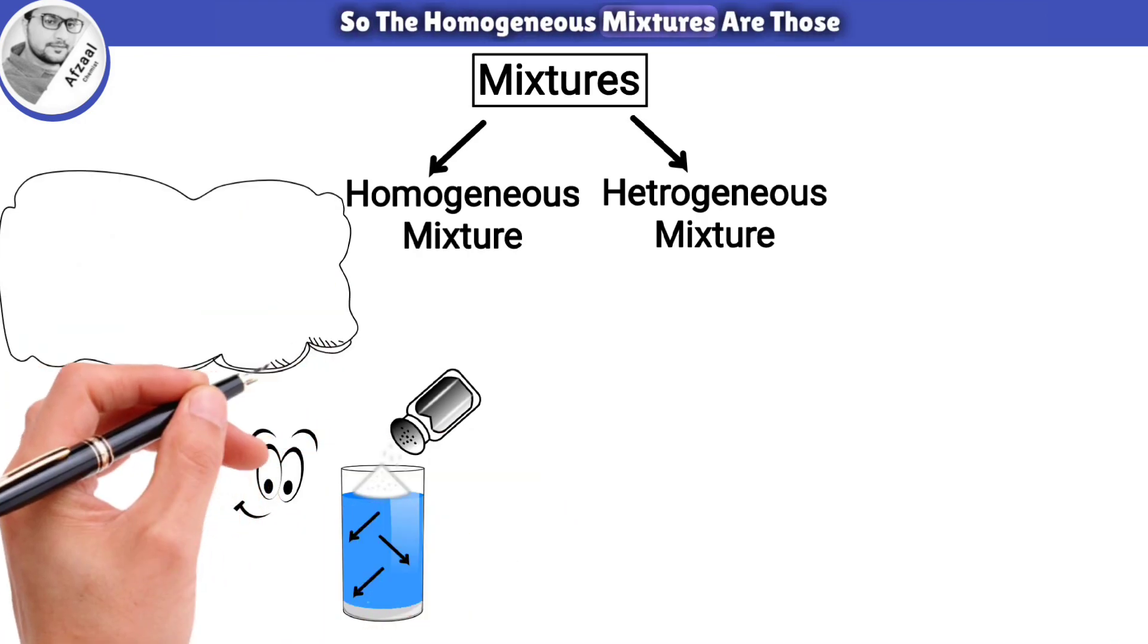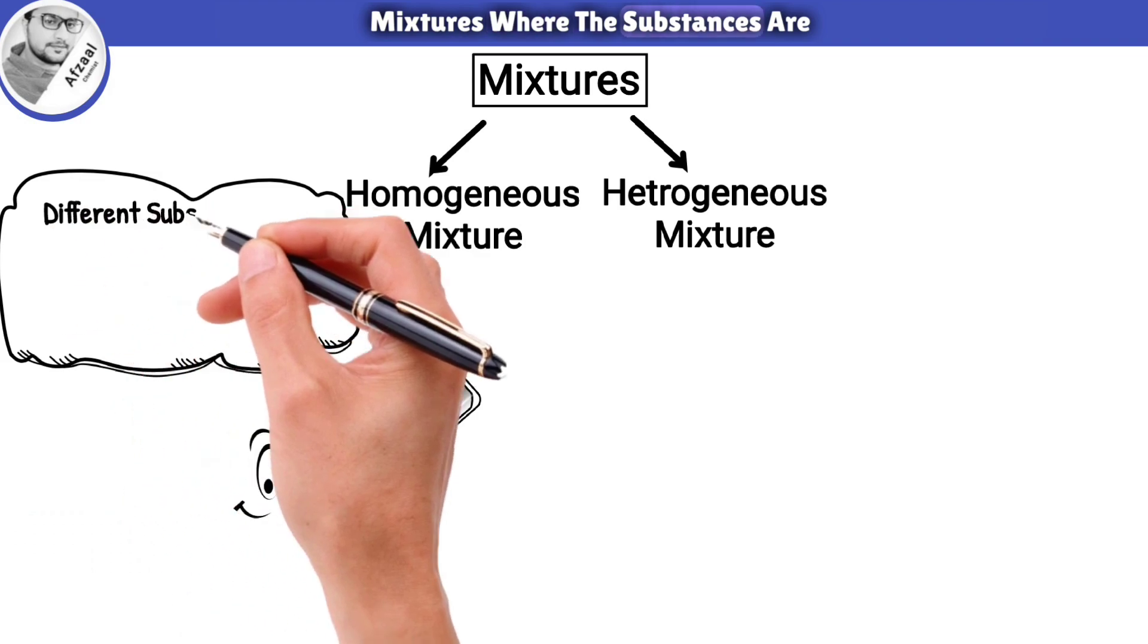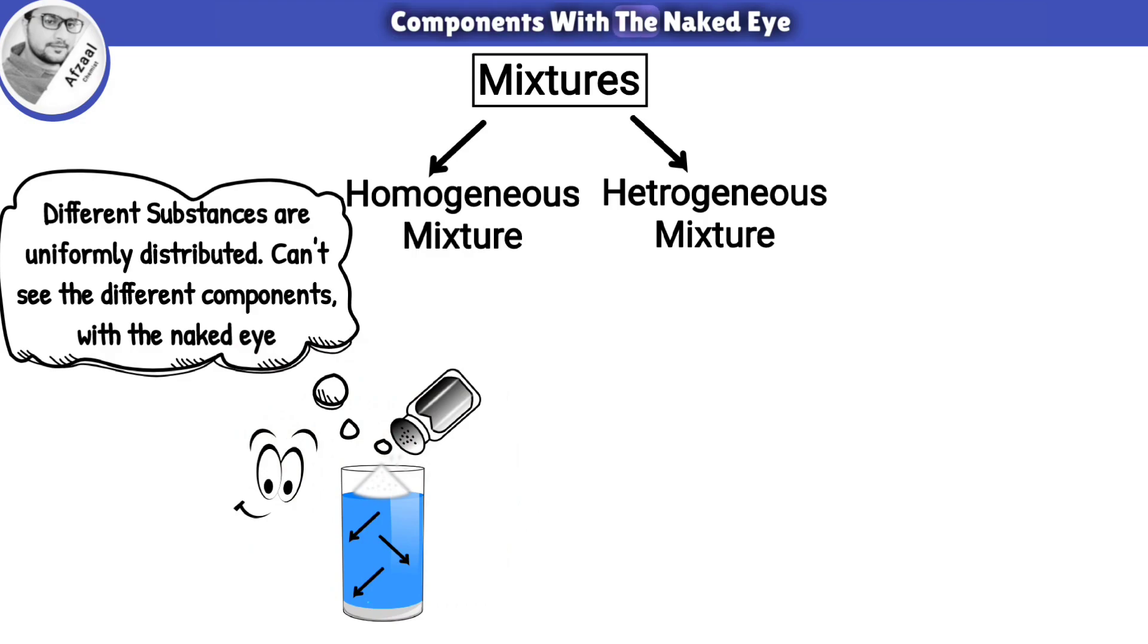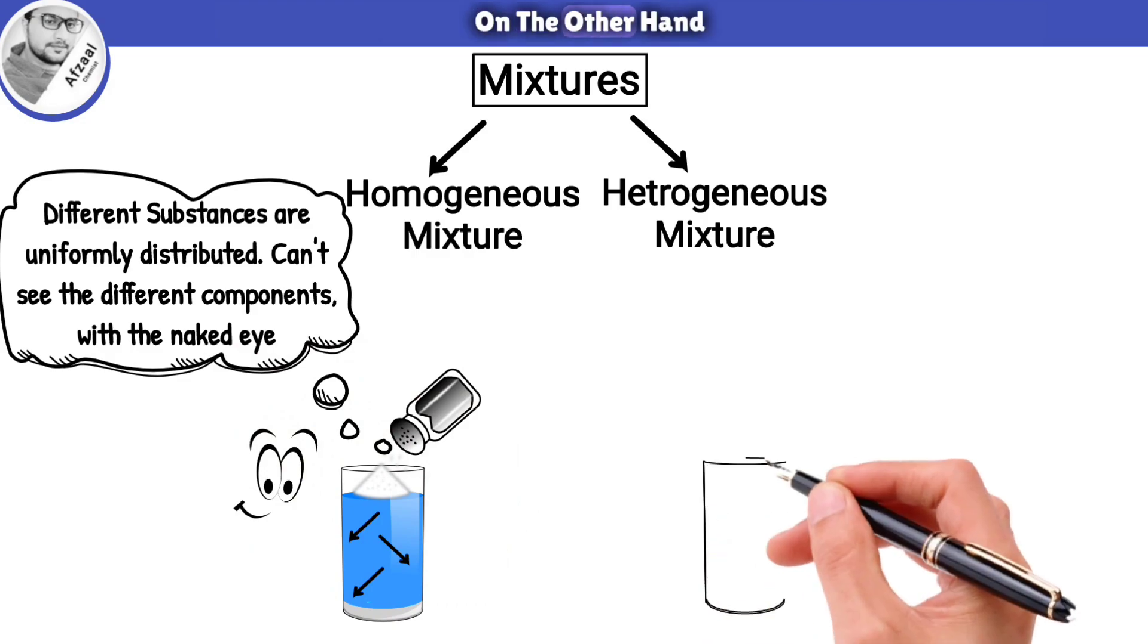So the homogeneous mixtures are those mixtures where the substances are uniformly distributed and you can't see the different components with the naked eye.